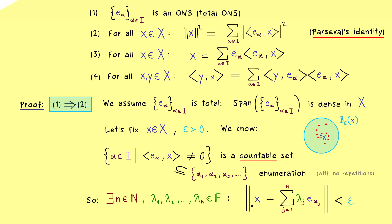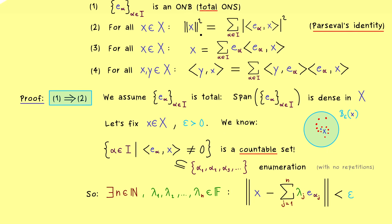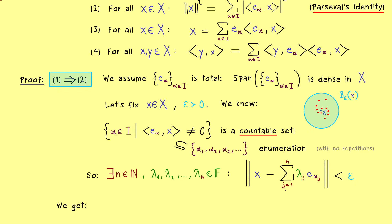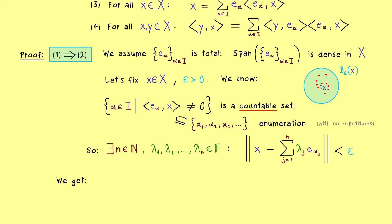More precisely, the distance between x and the linear combination is less than epsilon. To get something that helps us for Parseval's identity, we need to square both sides, since we want the norm of x squared. Let's call the linear combination y. So what we have is that epsilon squared is greater than the norm of x minus y squared. Squaring means we can use the inner product as usual.